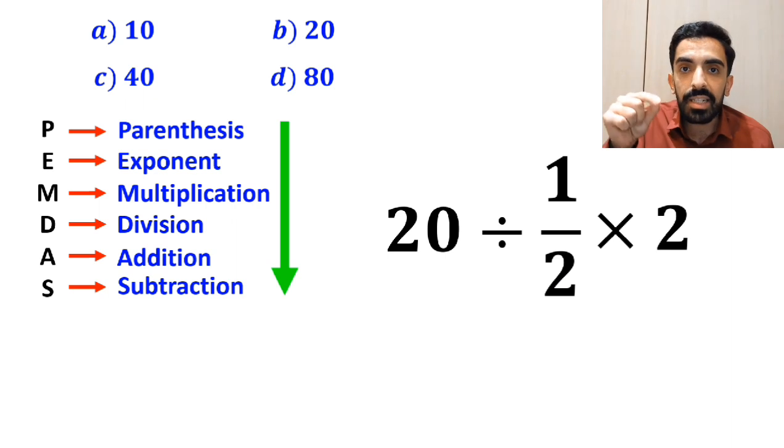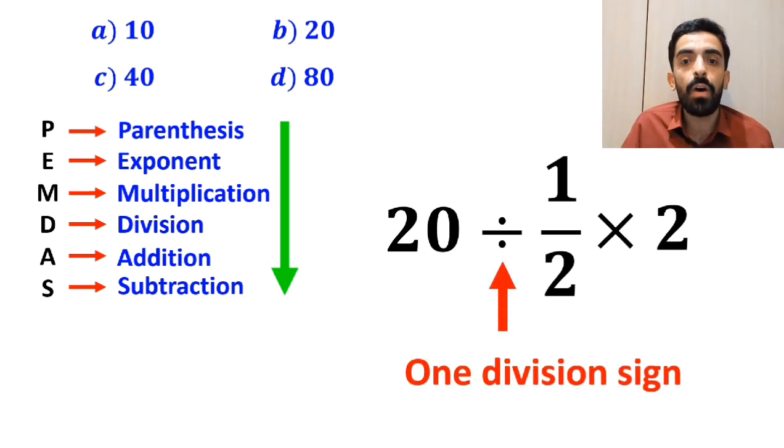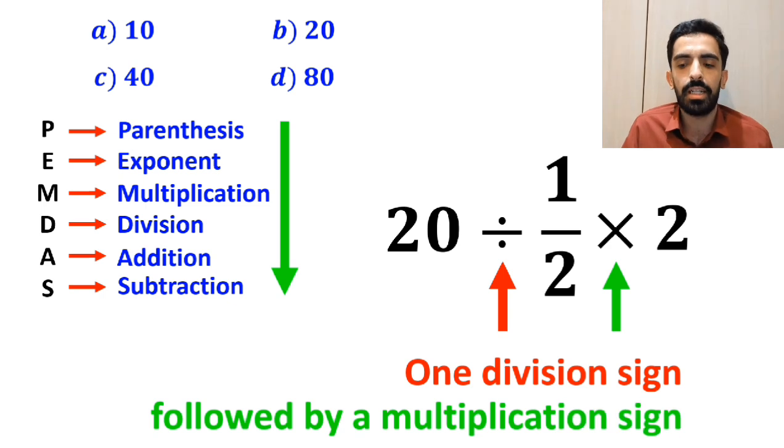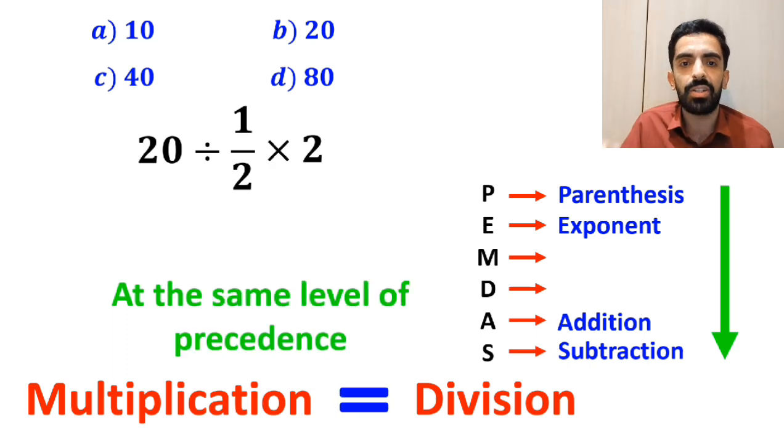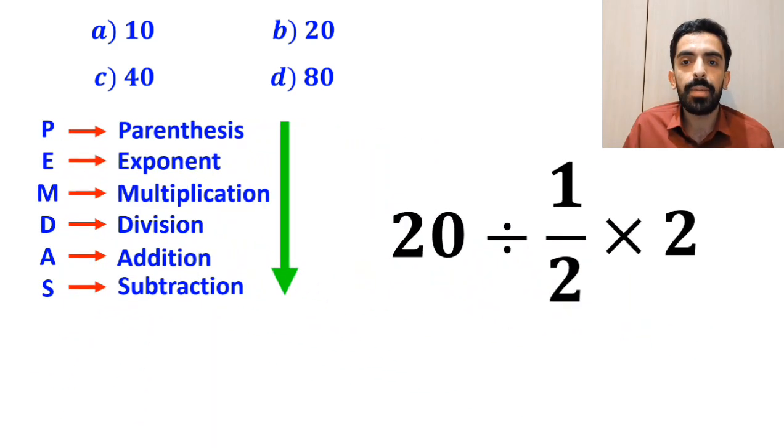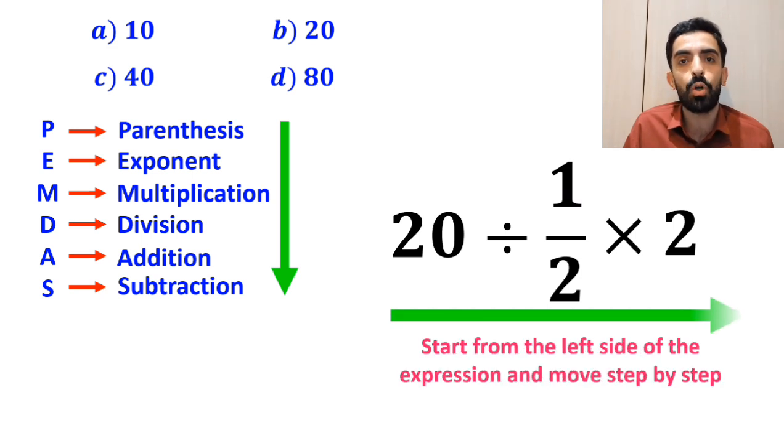As you can see on the screen, in this expression we have one division sign followed by a multiplication sign. It's very important to note that multiplication and division are at the same level of precedence. In this case, the best thing to do is to start from the left side of the expression and move step by step toward the right.